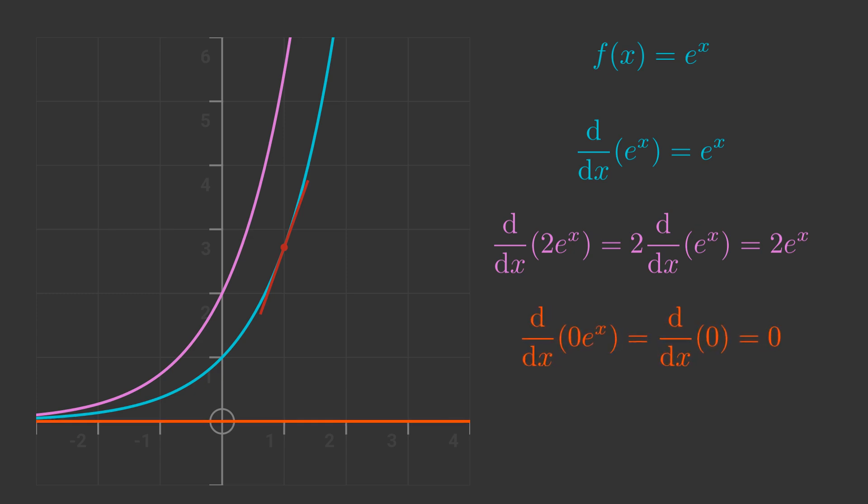We can even multiply by 0. 0 times e to the x is 0, so the curve degenerates to y equals 0. But the slope of that curve is 0 for every x, so the property still holds. If we want to specify the true exponential function e to the x, we need to add an extra condition — it can't be multiplied by anything. A useful way of specifying this is to say that the curve passes through the point (0, 1), because e to the 0 is 1. Only the exponential function has both properties: it is its own derivative and it passes through (0, 1).